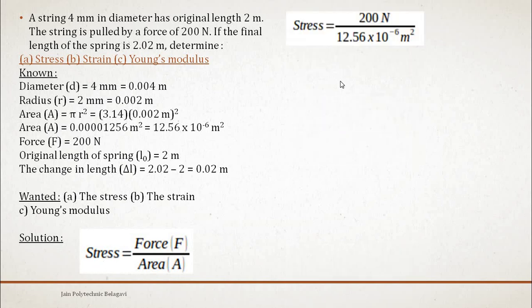Put the values of force and area. Load or force is 200 N and the area we found is 12.56 into 10 raised to minus 6 meter square. The answer for stress developed in that particular string by applying a pull force of 200 N is 15.92 into 10 raised to 6 N per meter square.